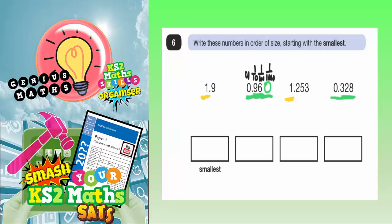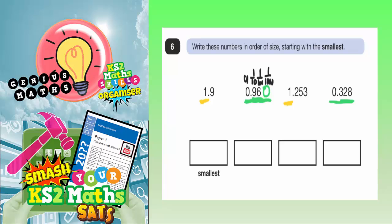So what we can see now is that 0.328 is the same as 328 thousandths, which would look like this, 328 thousandths. And 0.960 is the same as 960 thousandths. So 328 is obviously smaller than 960.